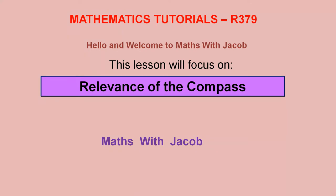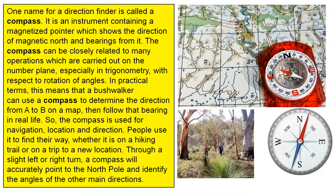Hello and welcome to Maths with Jacob. This lesson will focus on relevance of the compass. One name for a direction finder is called a compass. It is an instrument containing a magnetised pointer which shows the direction of magnetic north and bearings from it.